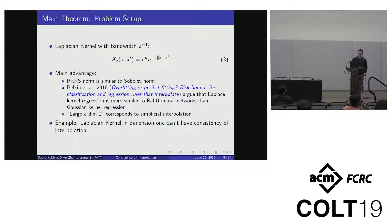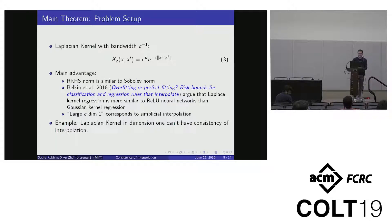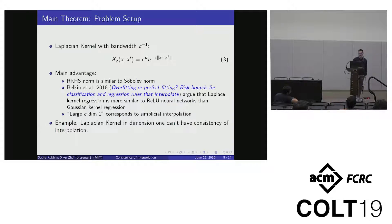Let's first talk about the problem setup. We deal with the Laplacian kernel with bandwidth. The main reason for choosing the Laplacian kernel is: firstly, it is similar to the Sobolev norm — the RKHS norm is a finite sum of L2 norms of derivatives. Secondly, Laplacian kernel regression is more similar to ReLU neural networks than other kernels like Gaussian. Lastly, in dimension one with small bandwidth C, this corresponds to simplicial interpolation, connecting it to Breiman's work.